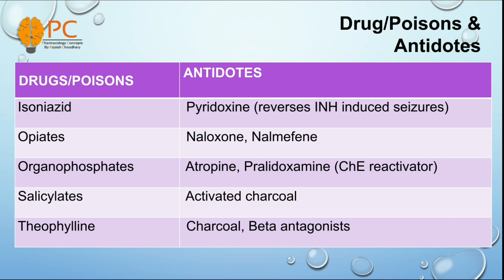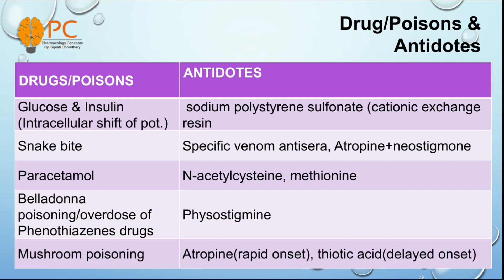And for theophylline, we can use charcoal and beta antagonist, means beta blockers. And for glucagon or insulin overdose, we can use sodium polystyrene sulfonate as antidote. And for snake bite or cobra bite, we can use specific venom antiserum. We can also use atropine with neostigmine as antidote.